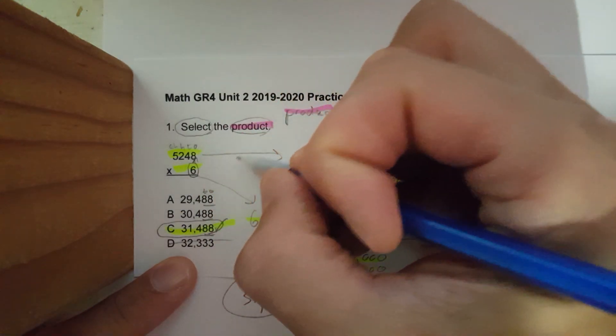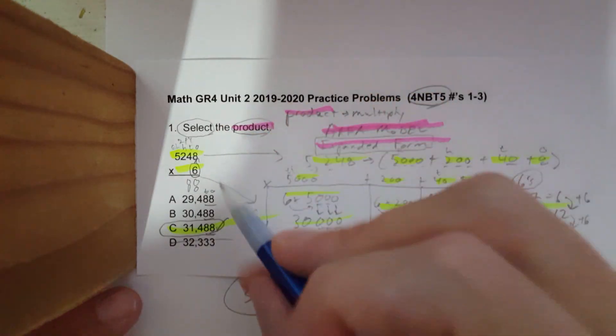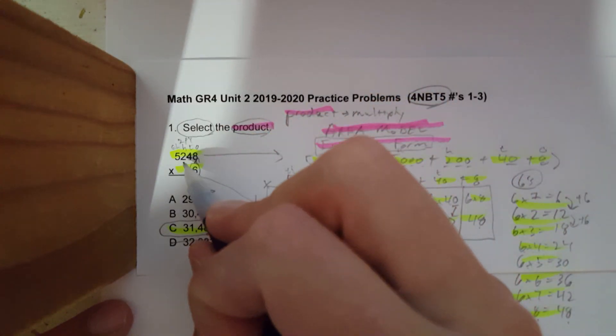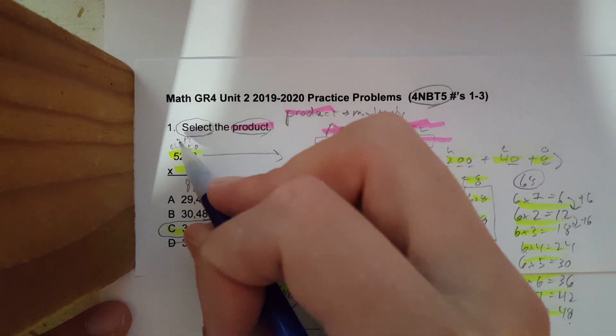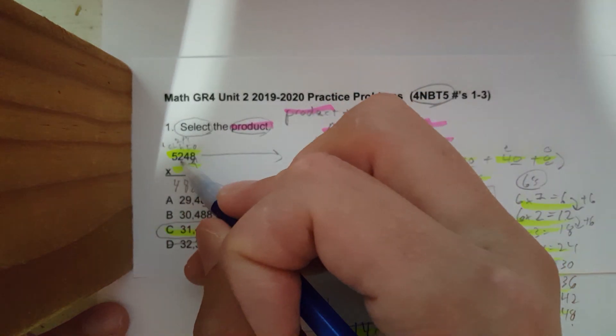Let's check. Six times eight is 48. Put the eight in the ones, I carry the four. Six times four is 24. 24 plus four is 28. Carry the two. Six times two - sorry if it's got zoned out there, we go - six times two is 12, plus the two is 14. I carry the one.